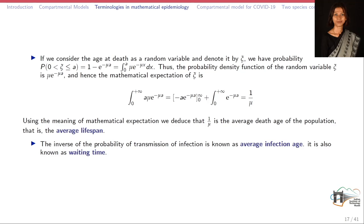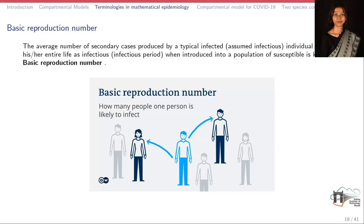The next is waiting time, or average infection age. The inverse of the probability of transmission of infection is termed the average infection age, and it is also known as waiting time. One of the very important terms used in mathematical epidemiology is the basic reproduction number. The basic reproduction number can be defined as the average number of secondary infections that an infected individual can produce during his or her entire period of infection. So this means — suppose an infected person is introduced to a population of susceptibles — the number of infections they can cause during their entire infectious period is your reproduction number for that particular disease.